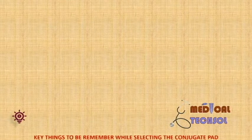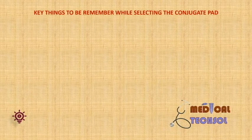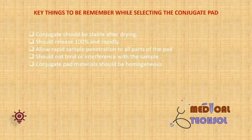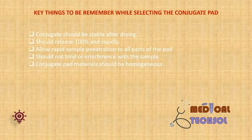Things to note while selecting the conjugate pad: 1. Conjugate pads should be stable after drying. 2. Should release 100% and rapidly. 3. Allow rapid sample penetration to all parts of the pad. 4. It should not bind or interfere with the sample. 5. Material should be homogenous.